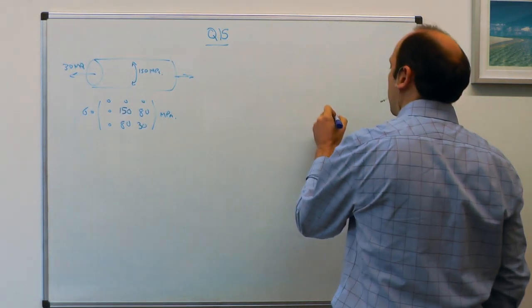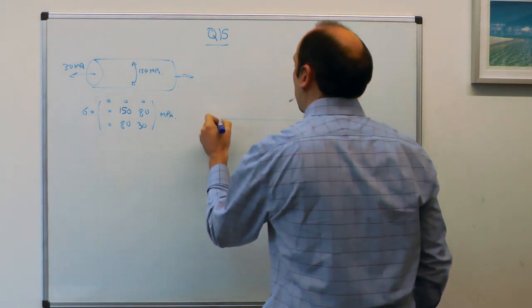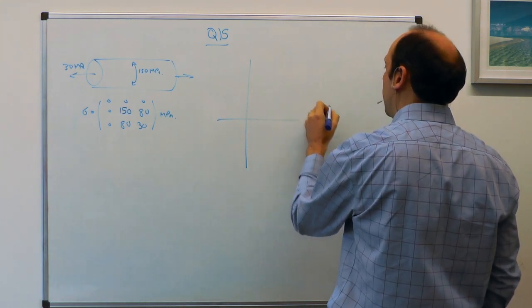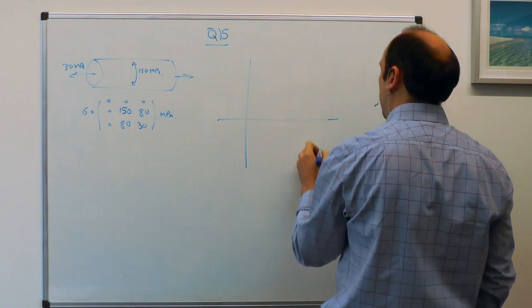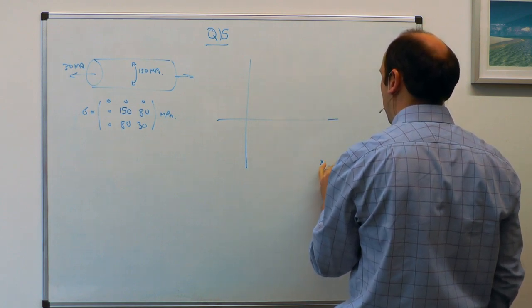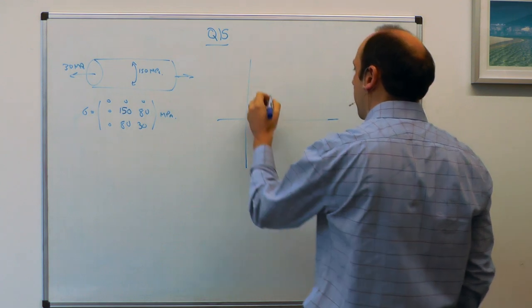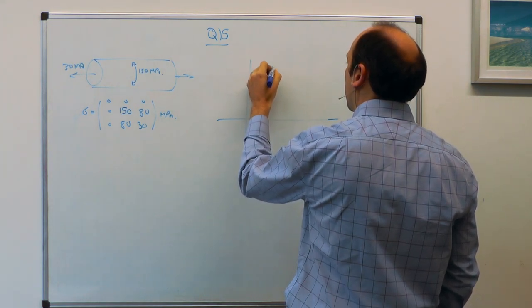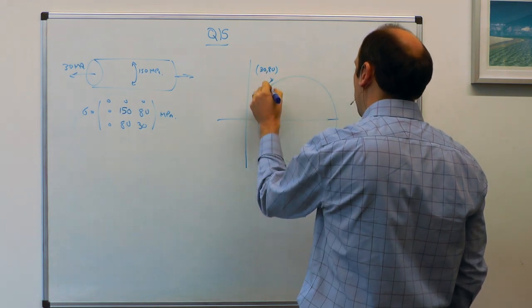So if we do a Mohr's circle, we'll have a Mohr's circle between 150, 80, which will be positive shear stress, so we go for the bigger one being down here. And 30, 80, and we draw a circle in between.